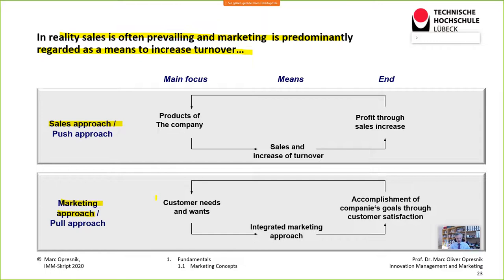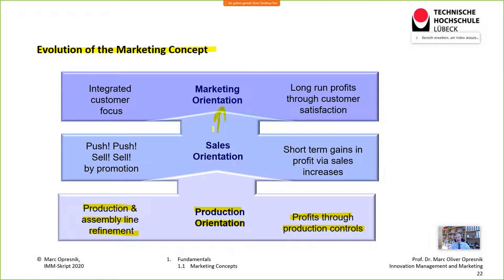In a sales orientation, the main focus is on the product of the organization. You try to increase sales, turnover, and profitability by selling products through marketing techniques — using brochures, clever pricing strategies, social media, and advertisement. However, this is not marketing. This is what we call a push approach: you try to push the products you are producing into the market.